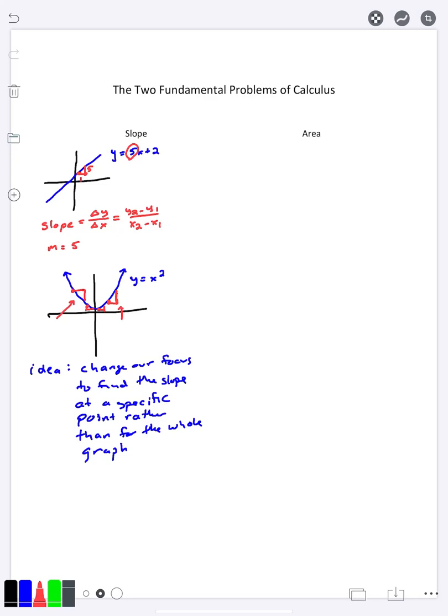We're going to call that graph, that function, we're going to call that the derivative. Again, we're not going into detail in this video how to find that, but I'm just trying to point out that what we're trying to do is we're trying to find slope on graphs that are not straight lines.